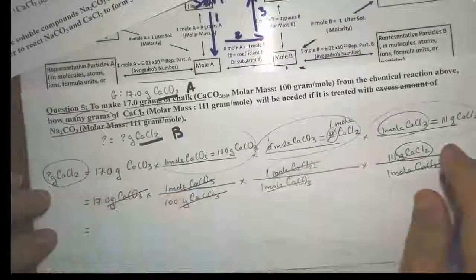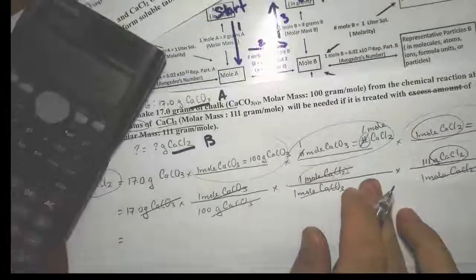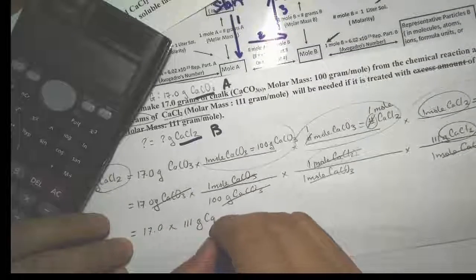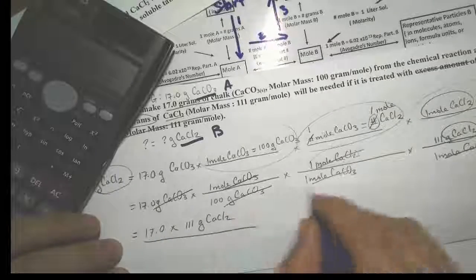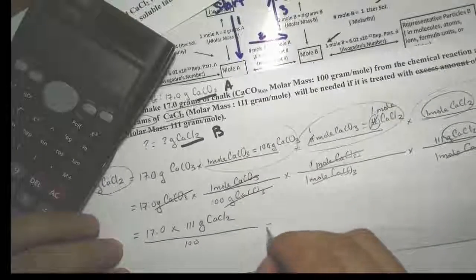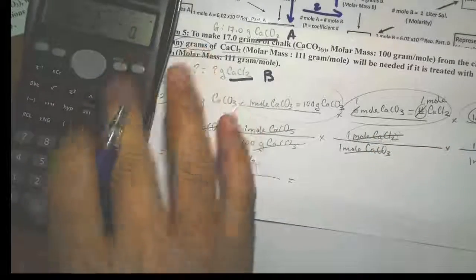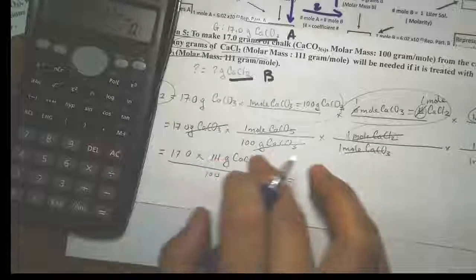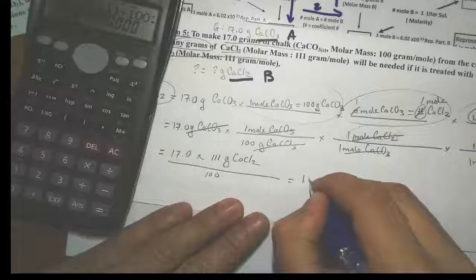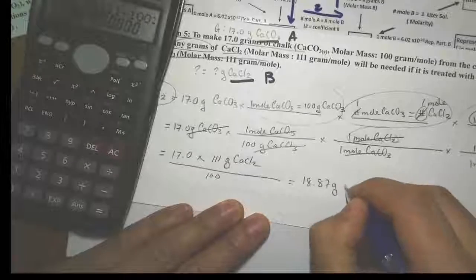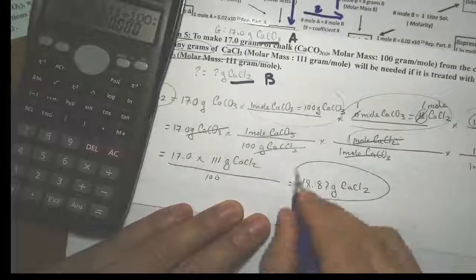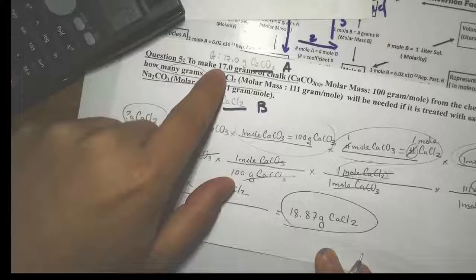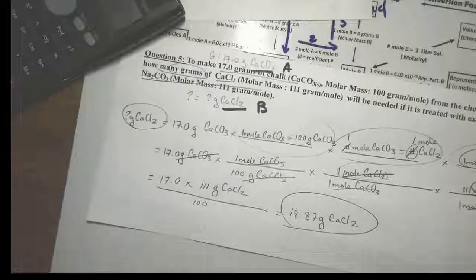Let's multiply everything on top and divide everything on the bottom: 17.0 times 111 divided by 100 gives us 18.87 grams of calcium chloride. So this is how much calcium chloride you need to react with sodium carbonate to make 17.0 grams of chalk.